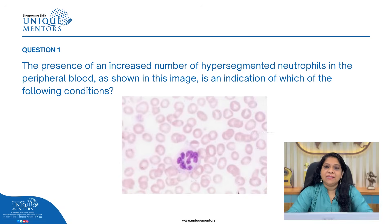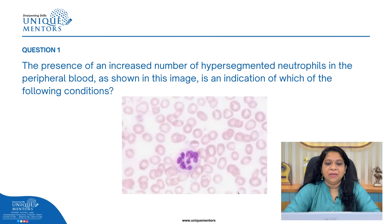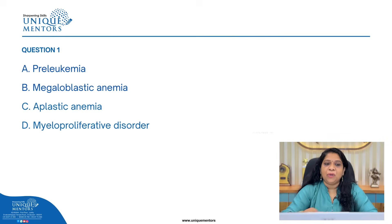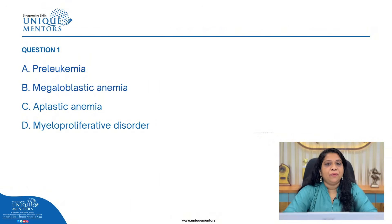The first question shows an image. The question reads: the presence of an increased number of hypersegmented neutrophils in the peripheral blood as shown in the image is an indication of which of the following conditions? Hypersegmented neutrophils means the neutrophils, which usually have three to four lobes, now have more than five or six lobes. From the picture, you can see it is a larger cell, not the normal size of a neutrophil. The options are: pre-leukemic condition, megaloblastic anemia, aplastic anemia, or myeloproliferative disorder.